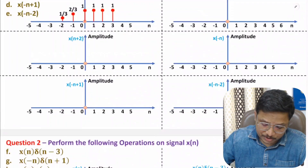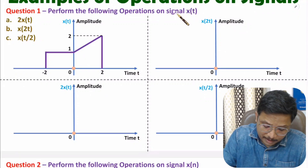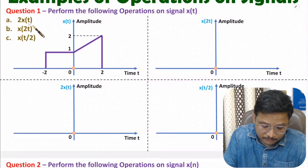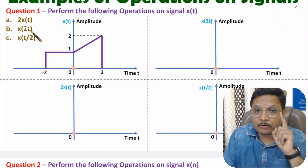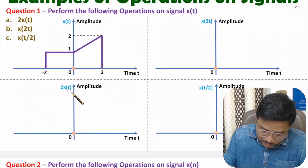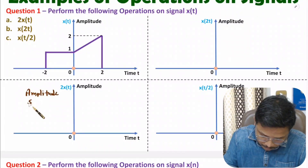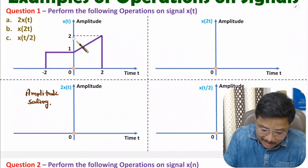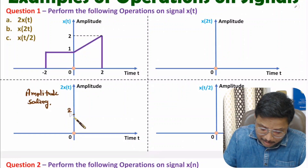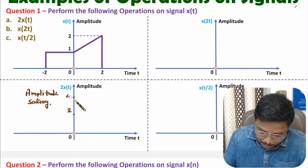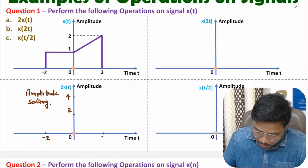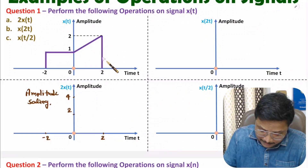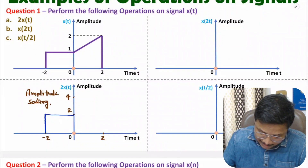Now I will explain the solution of question number one. We have signal x(t) and we need to perform operations a, b, and c. Operation a is 2·x(t), which means amplitude scaling. In amplitude scaling, only the amplitude of x(t) changes by a factor of two. So where we had amplitude one, it will now be two; where we had amplitude two, it will now be four. The time component remains as is — minus two and plus two. Shape-wise the signal is the same; this is 2·x(t).